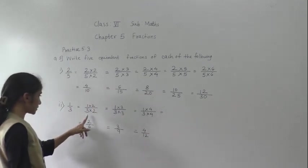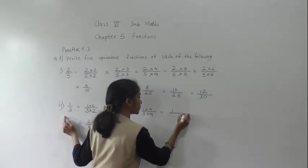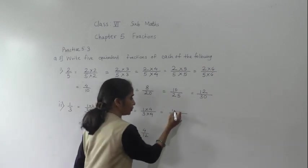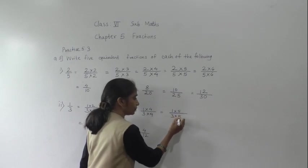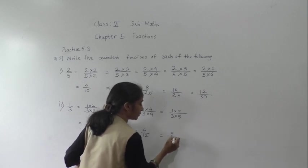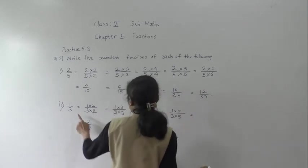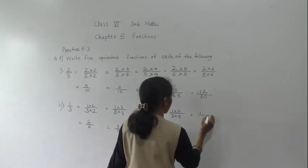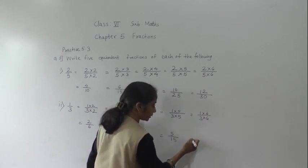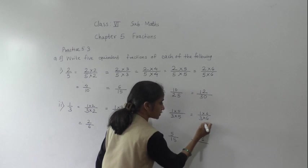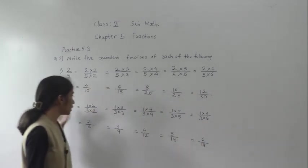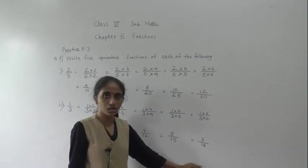Continuing for 1 upon 3: multiply by 5 — 1 five is 5 and 3 fives are 15, giving 5 upon 15. Multiply by 6: 1 six is 6 and 3 sixes are 18, giving 6 upon 18. So these all are the 5 equivalent fractions for the given fraction 1 upon 3.